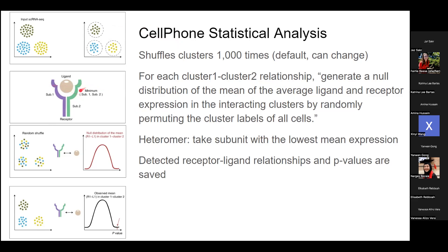One thing to mention: if there are subunits, they just take the average expression, which is the lowest. So for example for the receptor — they're calculating the receptor-ligand average, but if there's a receptor or ligand with multiple proteins, they'll take the expression level that's lower.